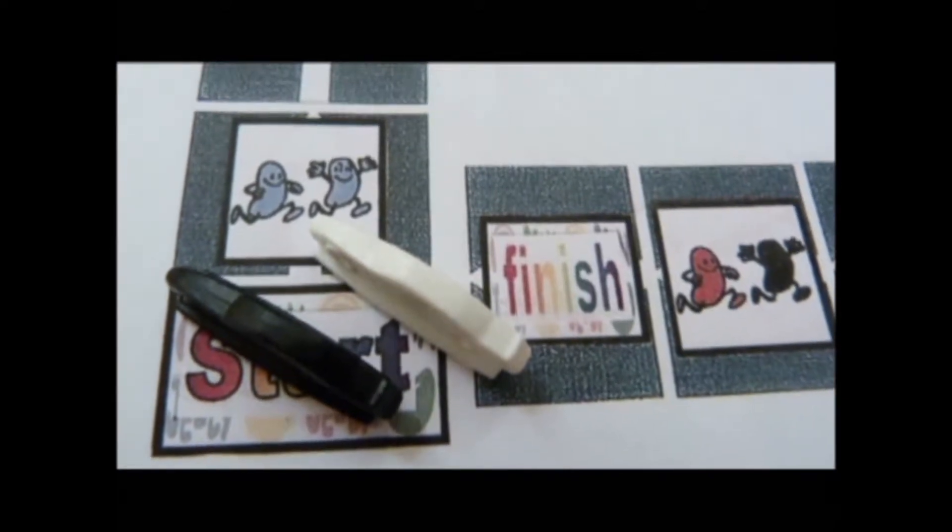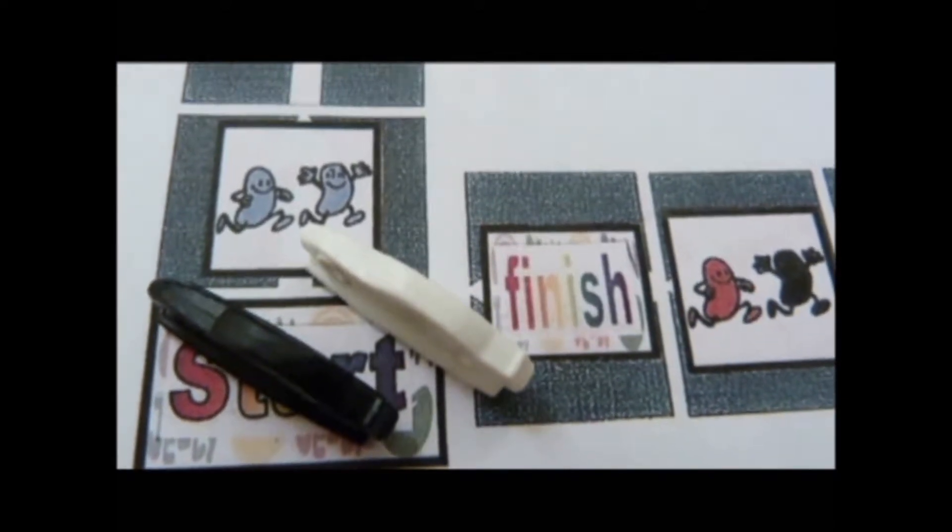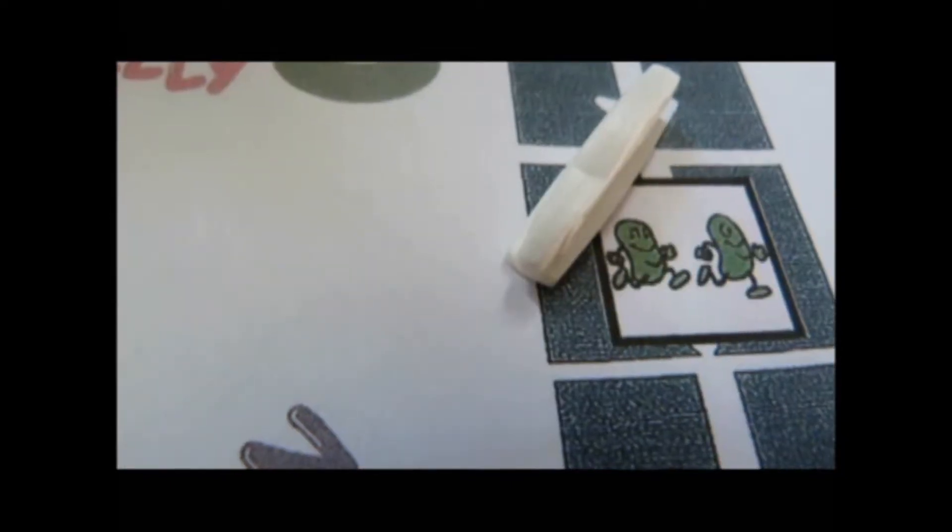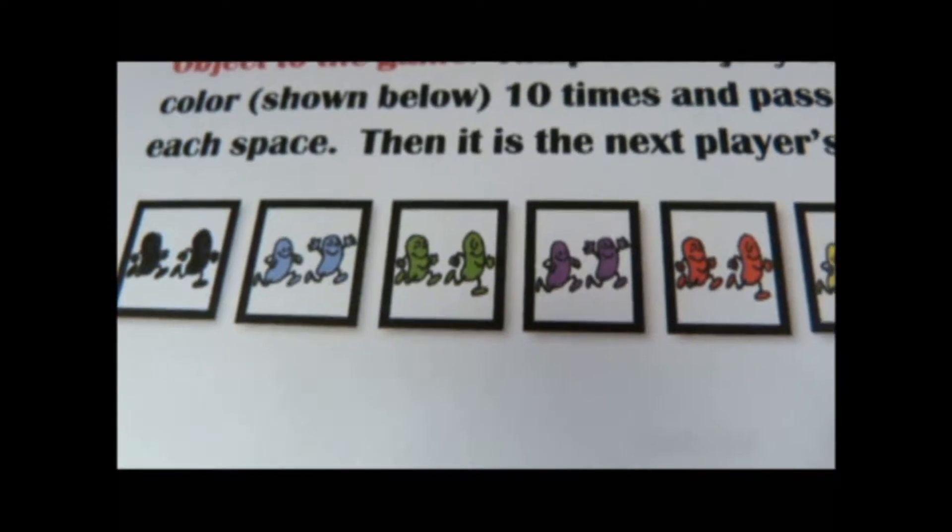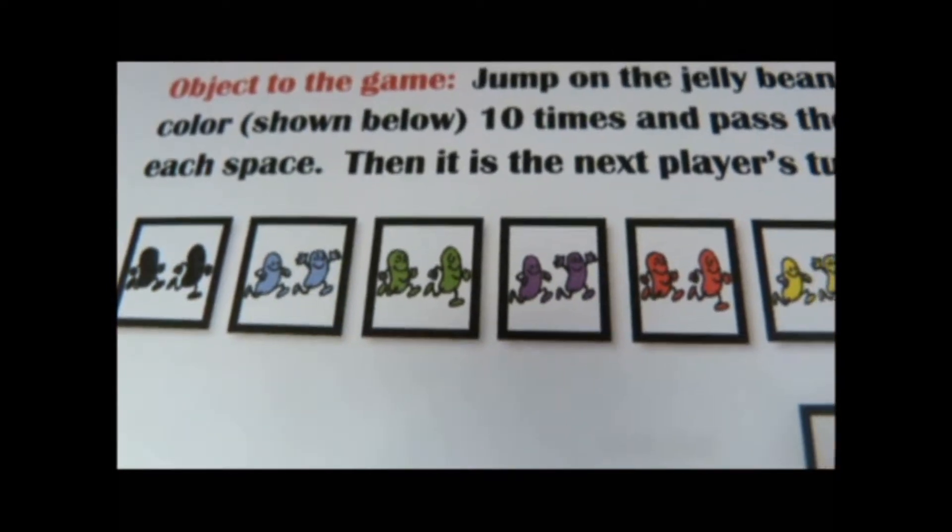Players start on the start space. Do not use the space during the game. The object of this game is to jump on the Jelly Bean Buddies spaces with the same color ten times and pass the finish line.